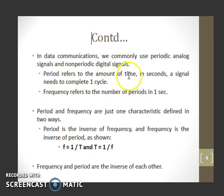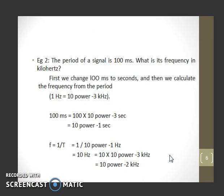Period refers to the amount of time in seconds a signal needs to complete one cycle. Frequency refers to the number of periods in one second. Period and frequency are just one characteristic defined in two ways: period is the inverse of frequency, and frequency is the inverse of period, as shown in the equation.